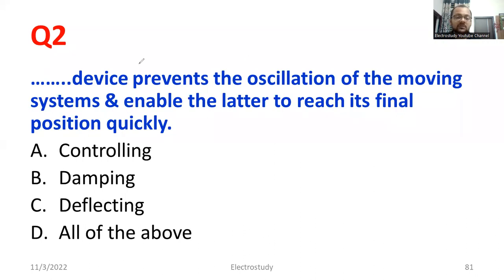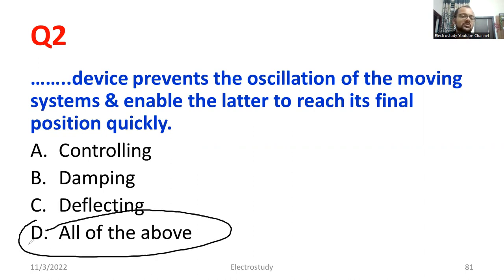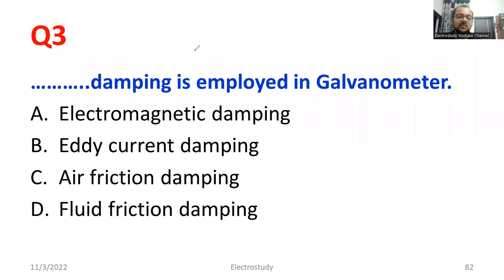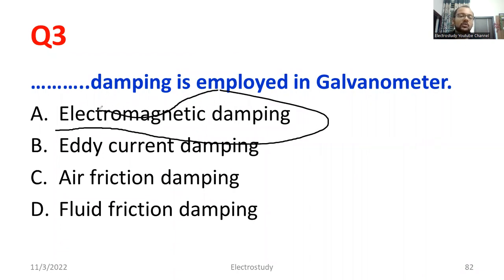Second question: a blank device prevents the oscillation of the moving system and enables it to reach its final position quickly. What device supports this process? Controlling is necessary, damping is necessary, and deflecting is necessary, so you can go for Option D — all systems are required. Read the question carefully. Question number 3: blank damping is employed in a galvanometer. The answer is electromagnetic type damping, which is most appropriate in the case of a galvanometer.